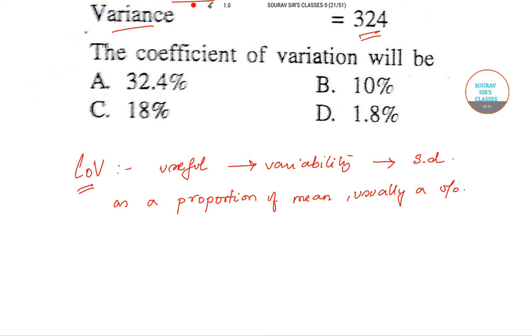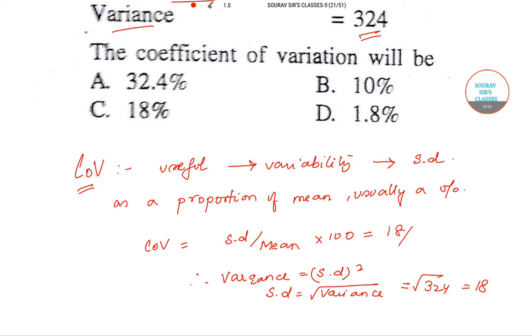The formula for it as a percentage is coefficient of variation equals standard deviation by mean into 100. Therefore, variance equals SD square, so SD equals under root variance. So it becomes under root 324, the value of which is 18. So let us substitute in this formula: we have 18, mean is 180, this is 100.